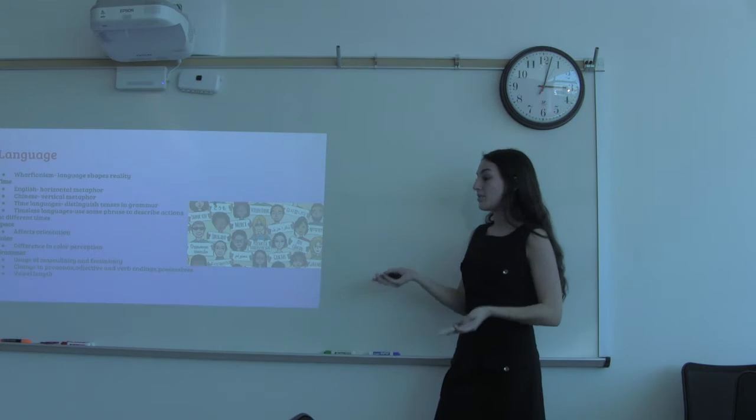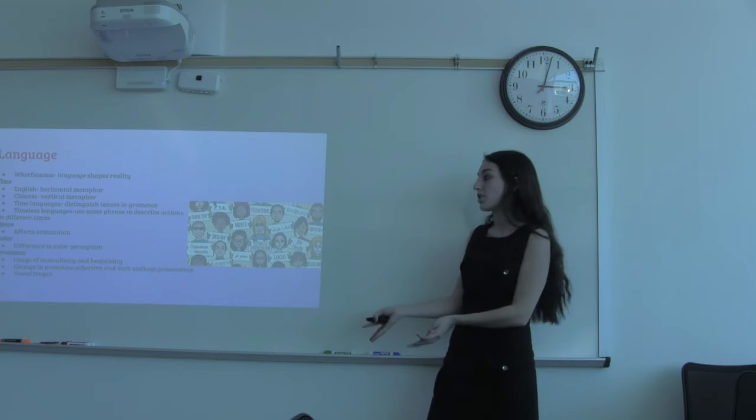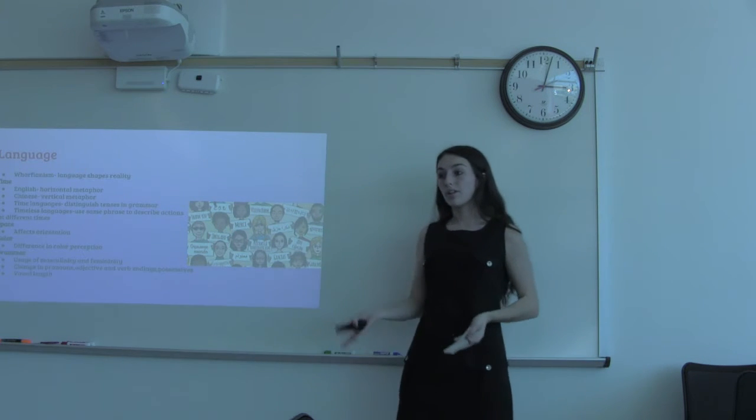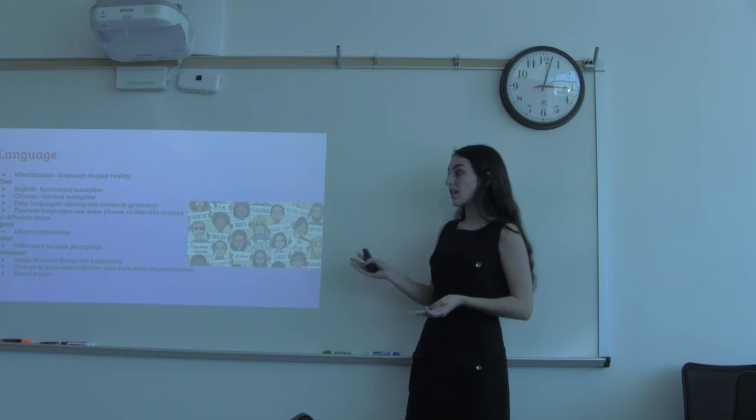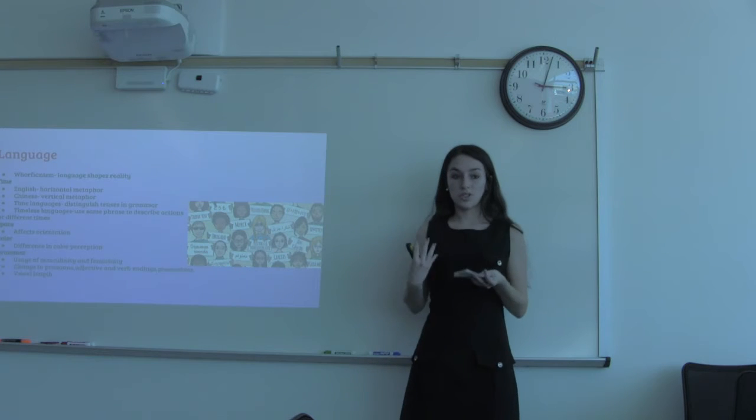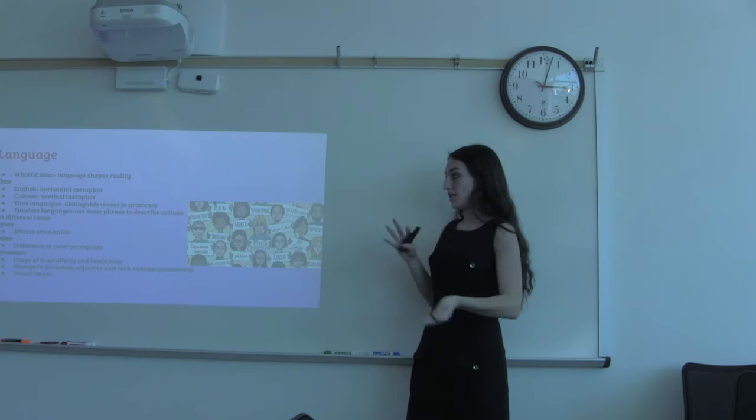So looking at time, every culture has their own perception of time. Some examples are how the English have a horizontal metaphor of time, meaning they look at time linearly. And then the Chinese have a vertical metaphor of time, meaning they describe it using words such as up and down.